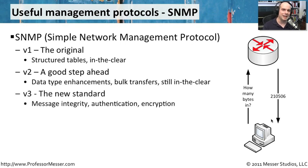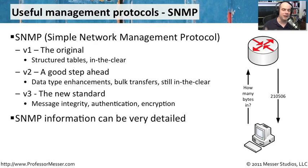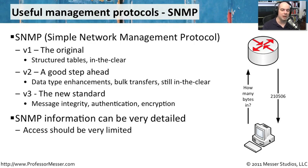SNMP version 3 is the latest standard, and from a security perspective it's the one you should almost always insist on. It checks the integrity of the message — verifying it really came from that device, that it was authenticated, and that the message wasn't changed along the way. Integrity, authentication, and encryption are all provided. The data going between the SNMP device and the reply is encrypted so nobody can tap into it. Because SNMP information can be very detailed about configurations, status, traffic, and more, you need to make sure only authorized people managing those devices can see this data — it is very critical.